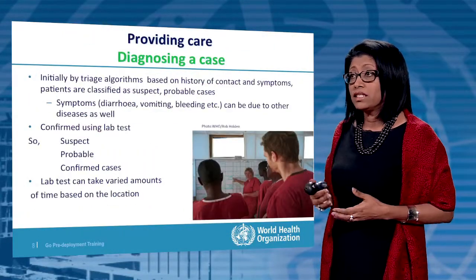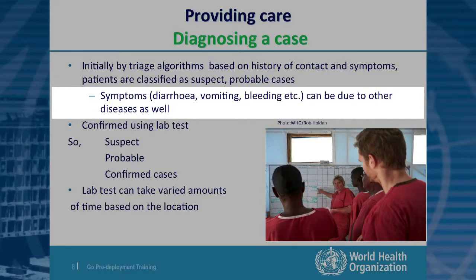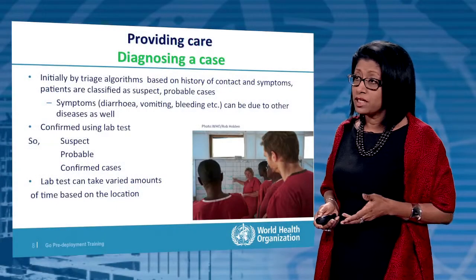The next step is diagnosing a case. Trained staff use triage algorithms — decision-making tools — and based on the history of contact and symptoms, patients are classified as suspect, probable, or confirmed cases. Symptoms such as diarrhea, vomiting, bleeding, and fever can also be due to other diseases, so this step is very important. A real diagnosis can only be confirmed using a lab test, and lab test results can take varied amounts of time based on where they are done and facilities available.